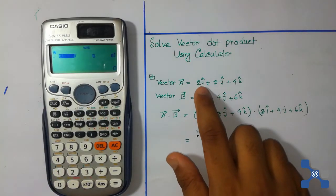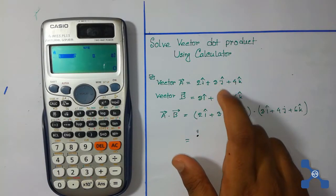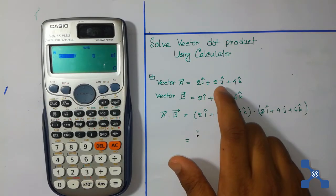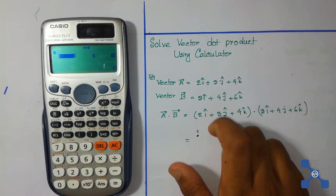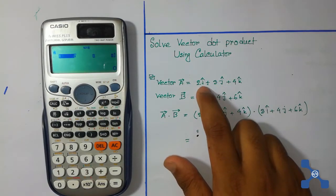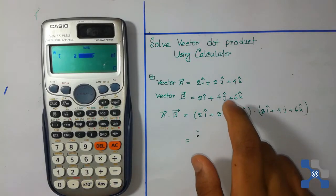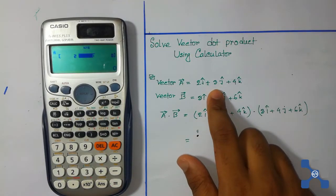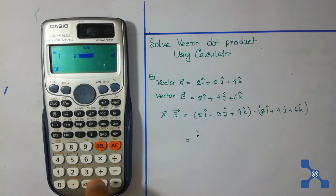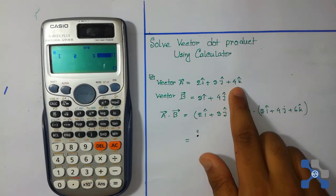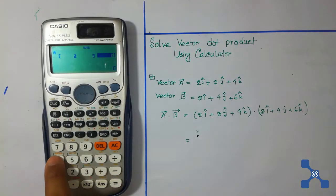Now enter the elements: the coefficients of I, J, and K. The coefficient of I is 2, so press 2 and then press the equal button. The coefficient of K is 4, so press 4 and then press the equal button.